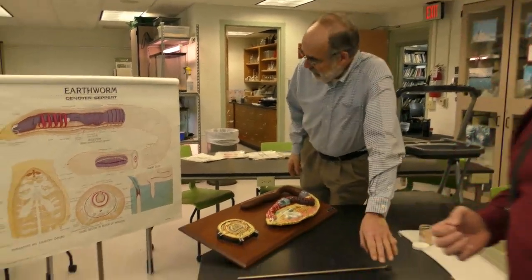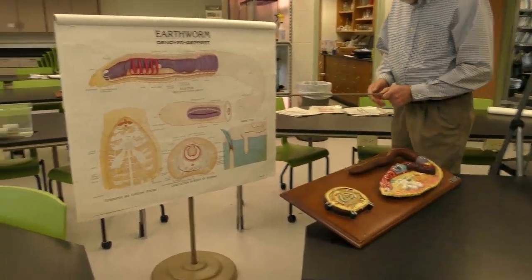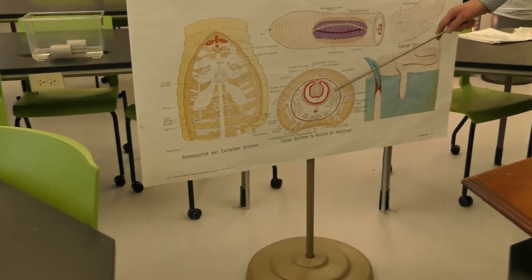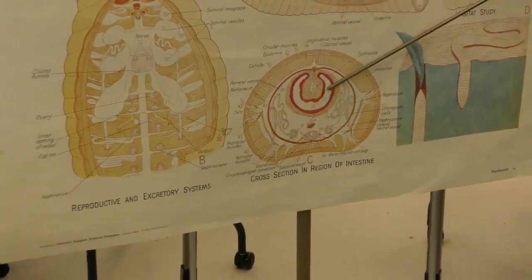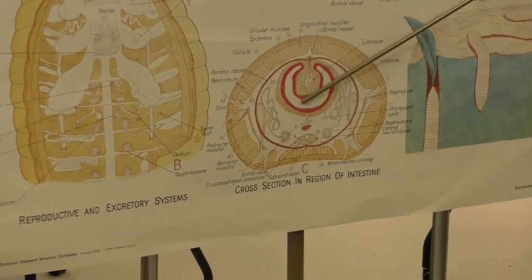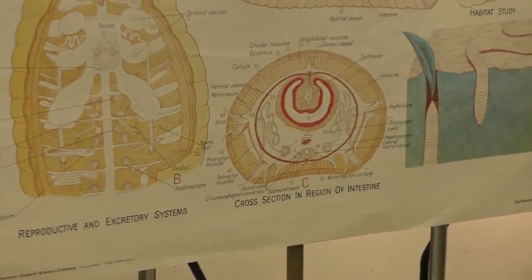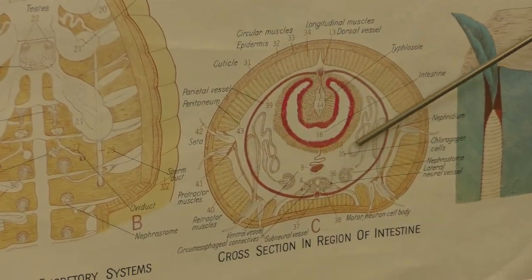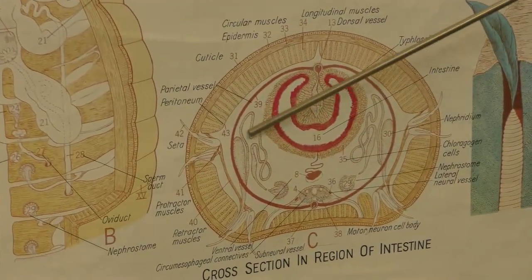If you look at the cross section of the worm down here at the bottom, this is a cross section of the worm looking down. And this would be the cross section of what Dr. Williams described as the intestinal tract. That's that open tube that runs the whole length of the worm. The larger cylinder here would be actually the coelom.